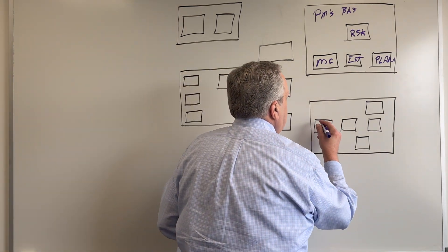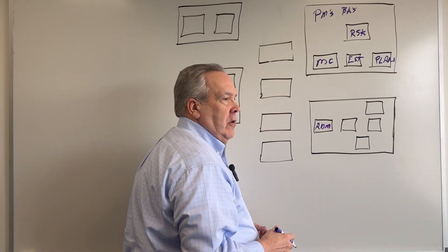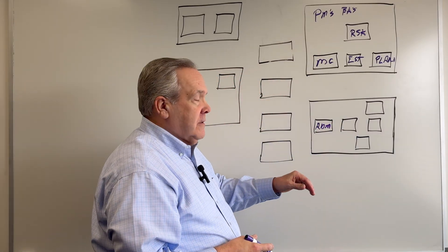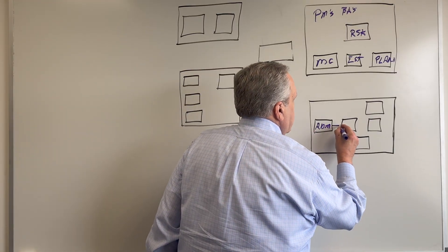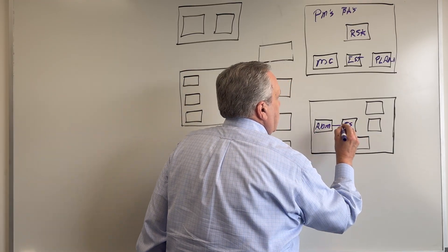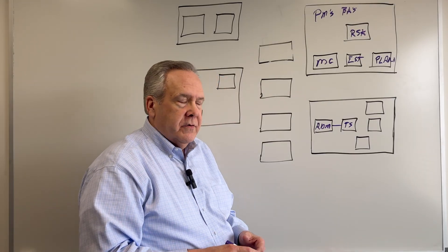So the first one is requirements development and management. This is where your RTM, requirements traceability matrix will come into play. The RDM will feed into technical solution. Technical solution is where the design takes place, the design of the product, design of what you're delivering.